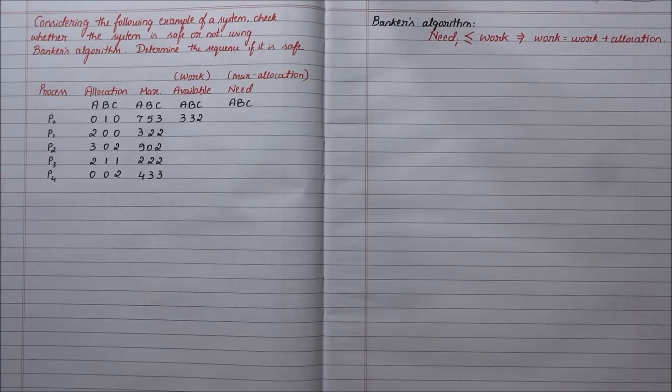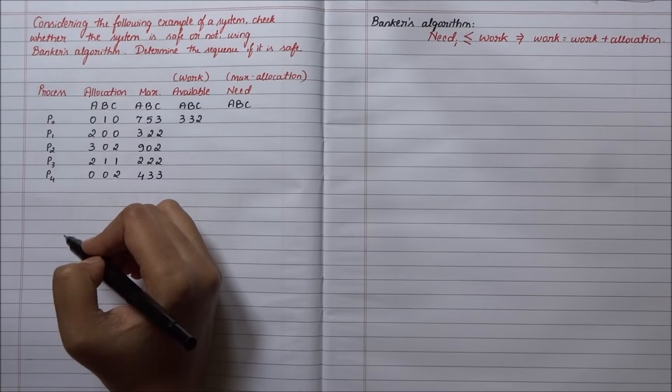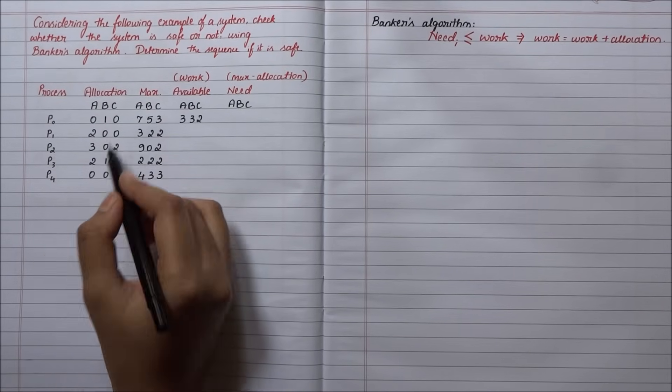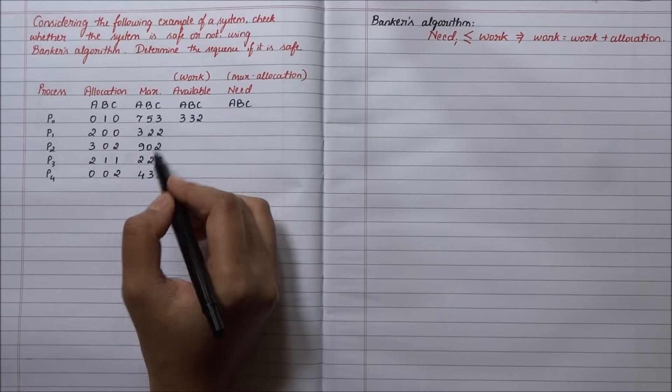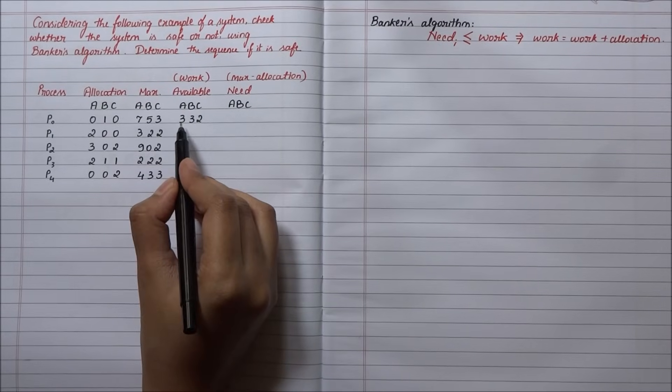Banker's algorithm is one of the famous algorithms under deadlock avoidance. Let's take an example of a system with five processes whose allocation and maximum is given, and initially the work or available is 3-3-2.